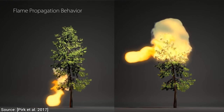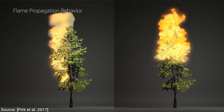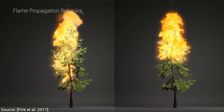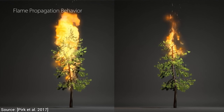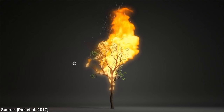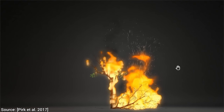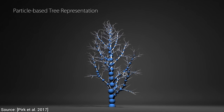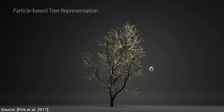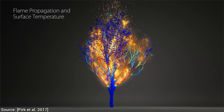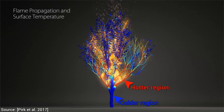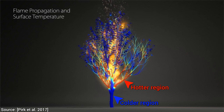Everything we can possibly ask for from such a simulation is there. Each leaf has its own individual mass and area, they burn individually, transfer heat to their surroundings, and finally, branches bend and can eventually even break in this process. If we look under the hood, we see that these trees are defined as a system of connected particles embedded within a physics simulator. These particles have their own properties — for instance, you see the temperature changes here at different regions of the tree as the fire gradually consumes it.